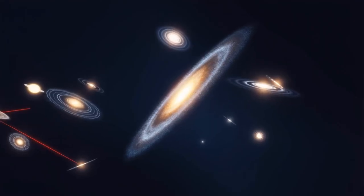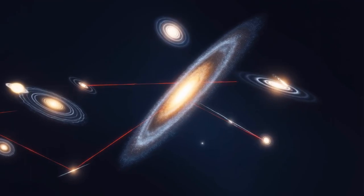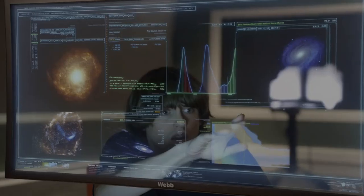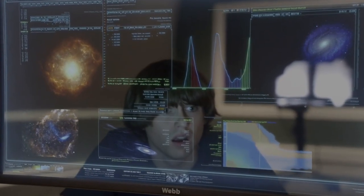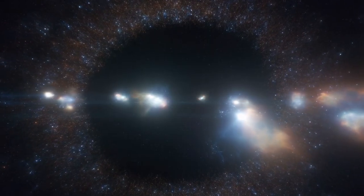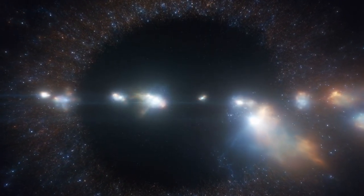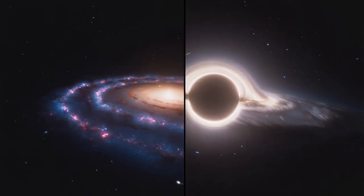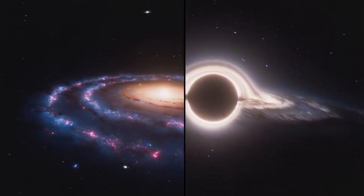If GNZ11 wasn't alone, other similar galaxies could mean a serious flaw in our understanding. As Webb continued its observations, things became even more puzzling. Webb began finding distant and luminous objects, leaving scientists uncertain about their nature. Are they galaxies, supermassive black holes, or something else entirely?